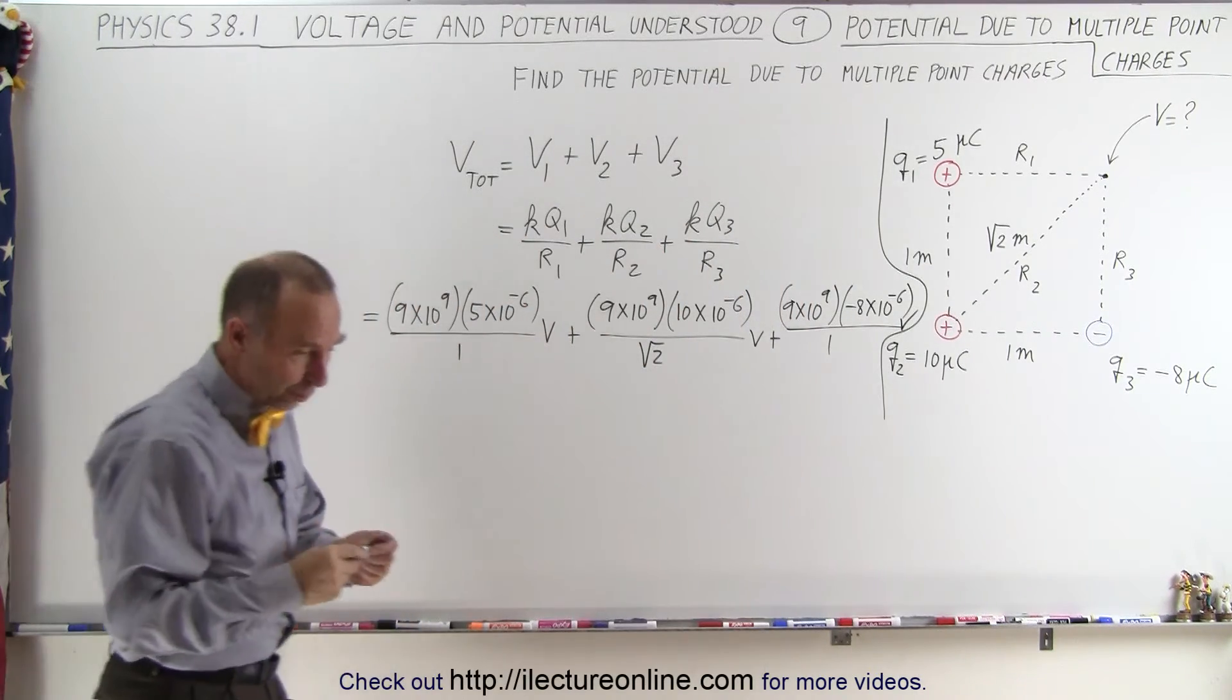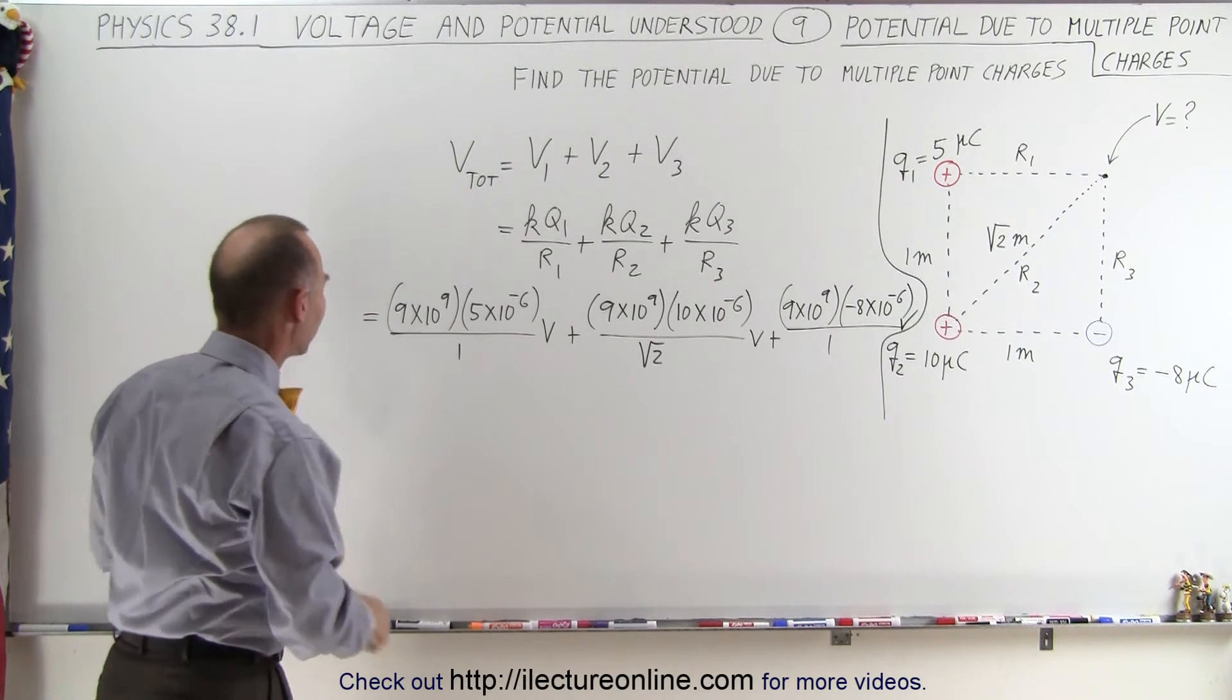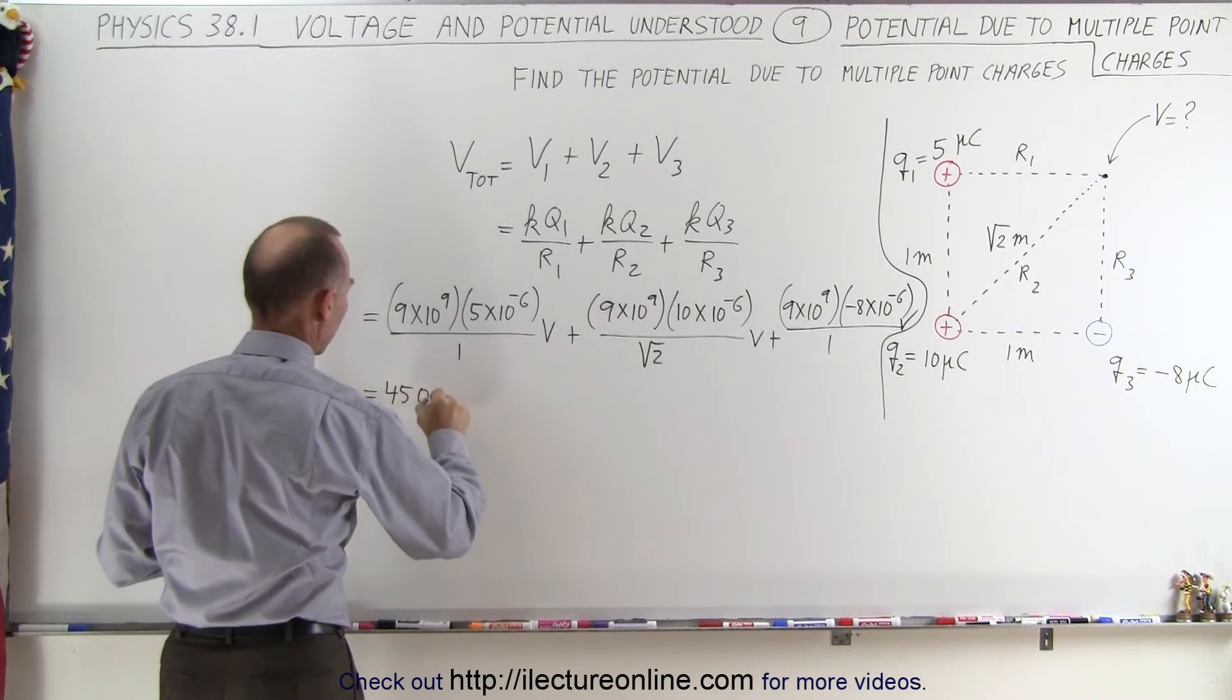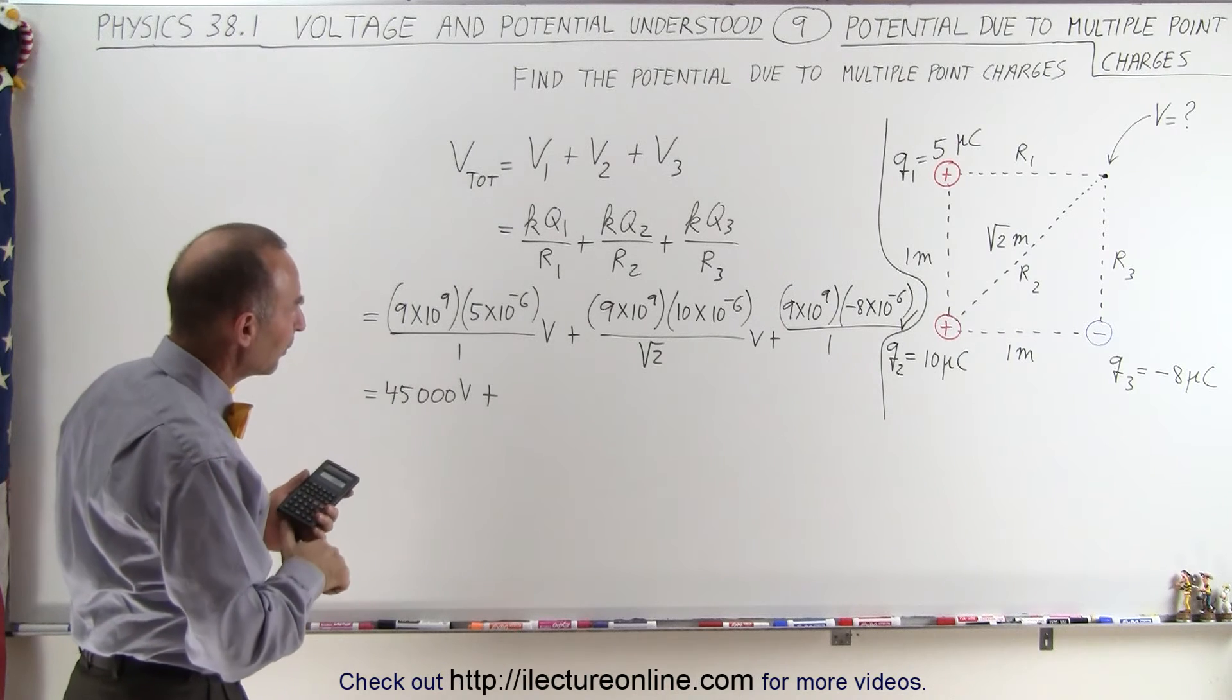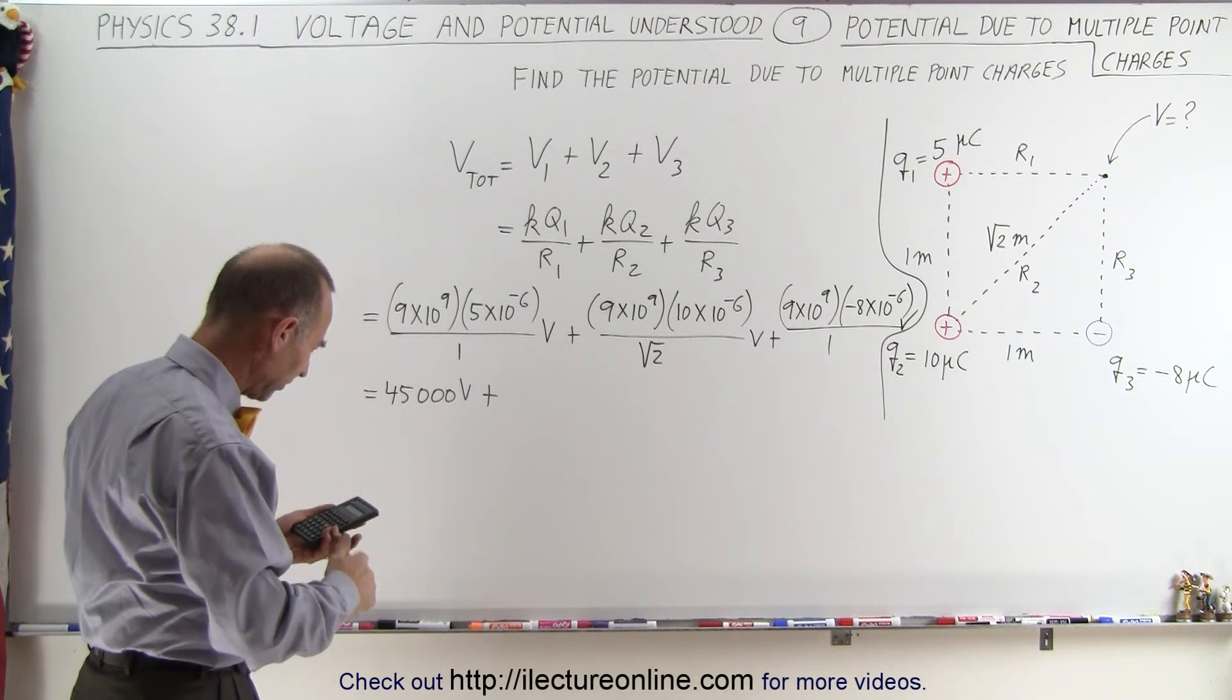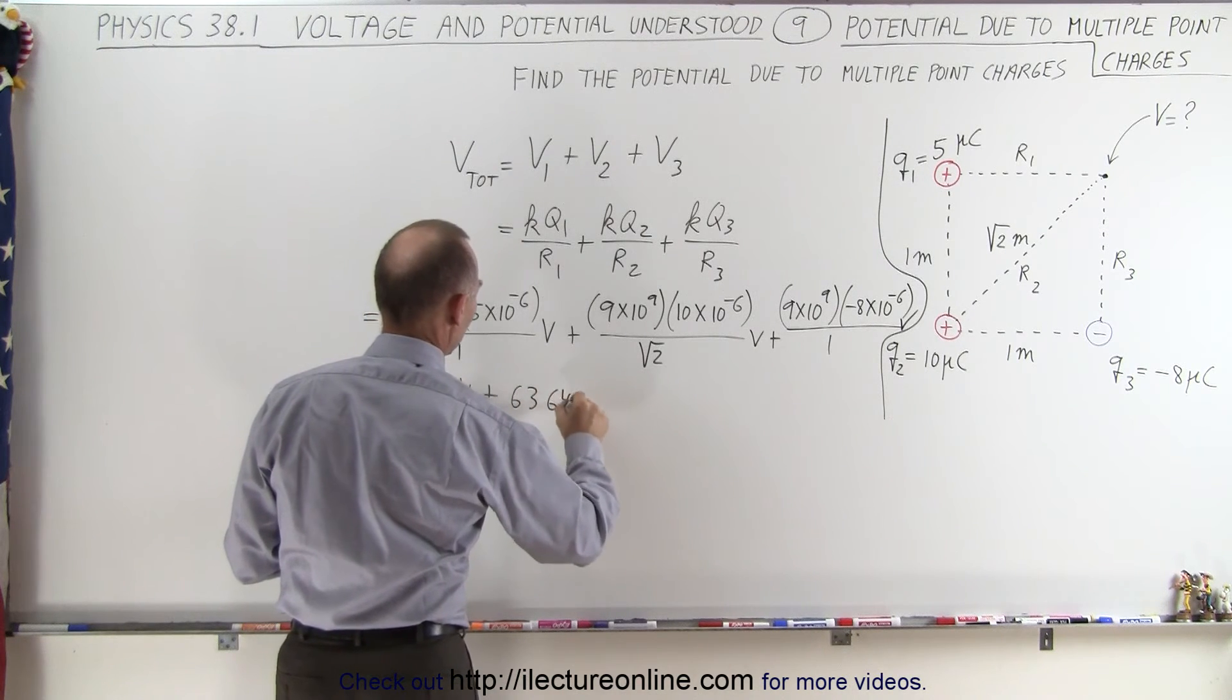Now we'll go ahead and work each one of those out. So the first one is going to be, that looks like 45,000 volts, plus the next one, that will be 90 divided by the square root of 2, which is 63,640 volts.